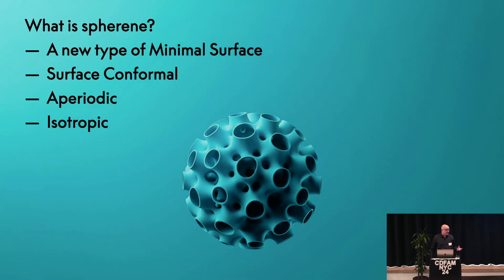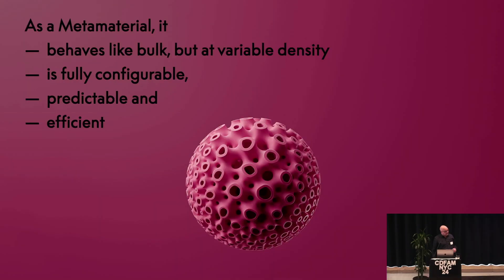So what is Sphirin? Sphirin is the opposite of the sphere — hence the name. It's a new type of minimal surface that we discovered and for which we wrote the algorithm to create. It is always surface conformal, it's aperiodic, and it's isotropic — truly isotropic. It is a metamaterial and because of its isotropicity, it behaves like bulk material but has variable density, configurable stiffness, configurable geometry, configurable interface to the surroundings, configurable thickness, and it is predictable and extremely efficient.